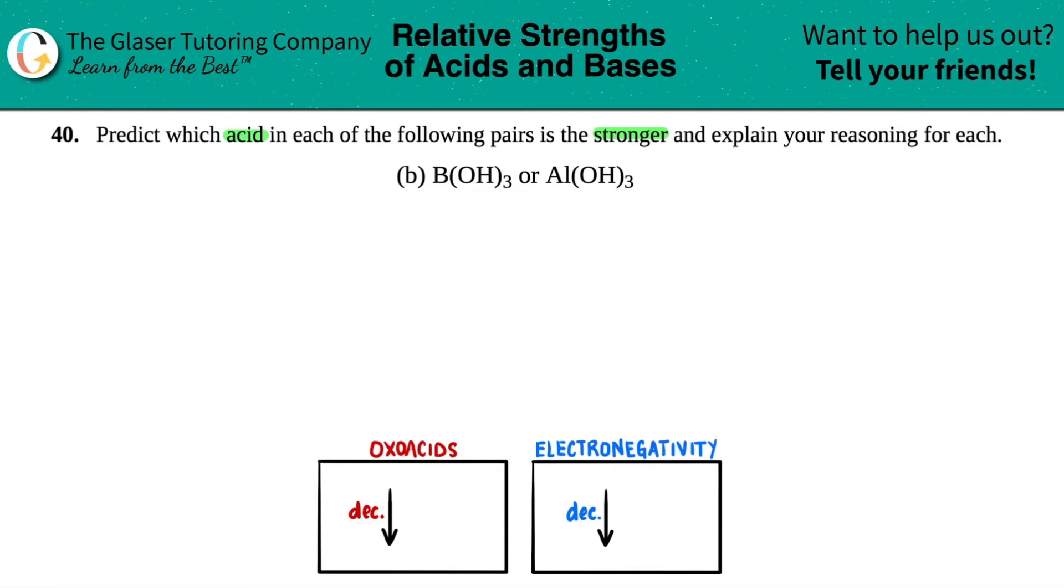So we have to pick out a trend here. Now I can't talk about binary acids because there's three elements here. Remember, binary acids, you're only allowed to have a hydrogen and then a random element. But once you have hydrogen, oxygen, and then another element, you can't use binary acid.